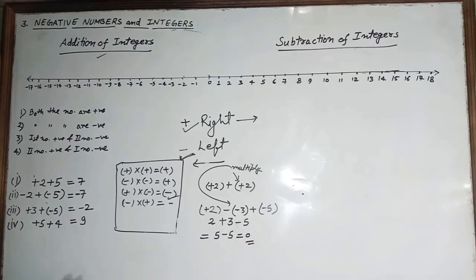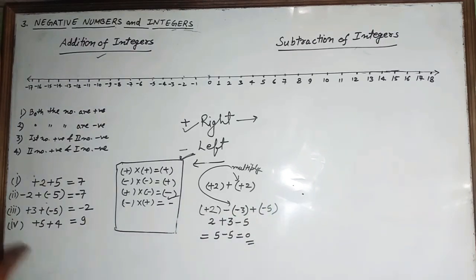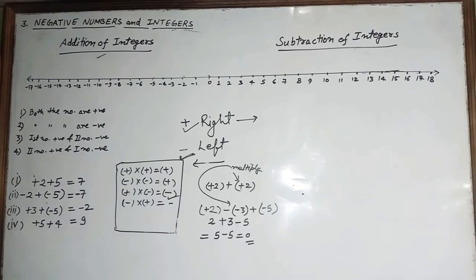Now solving: 2 plus 3 equals 5, and 5 minus 5 equals 0. That is how you solve expressions with brackets and mixed signs.